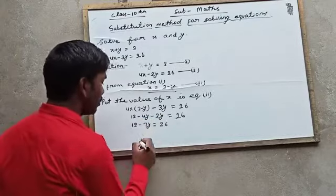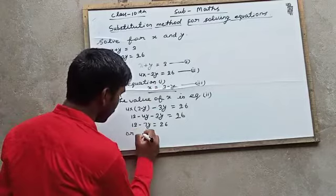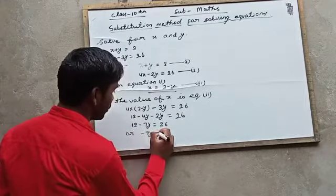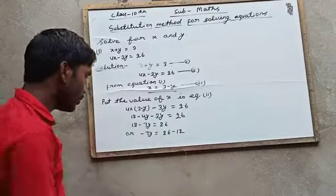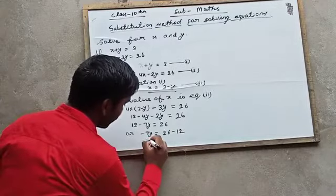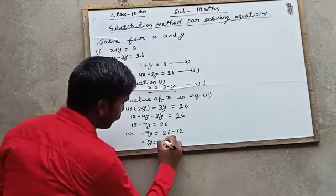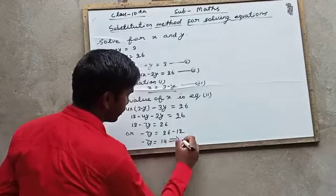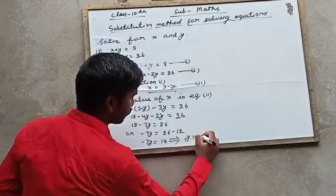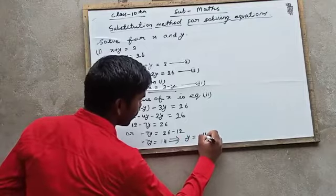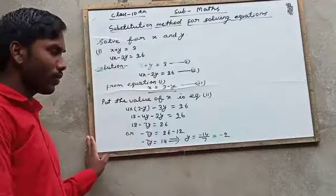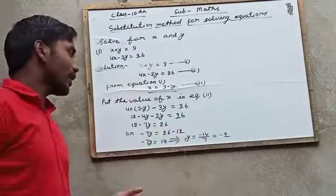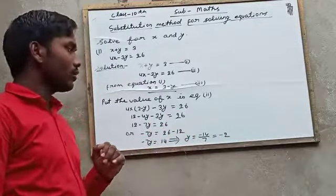Or minus 7y is equal to 26 minus 12, so minus 7y is equal to 14. This implies y is equal to minus 14 upon 7, so minus 2.